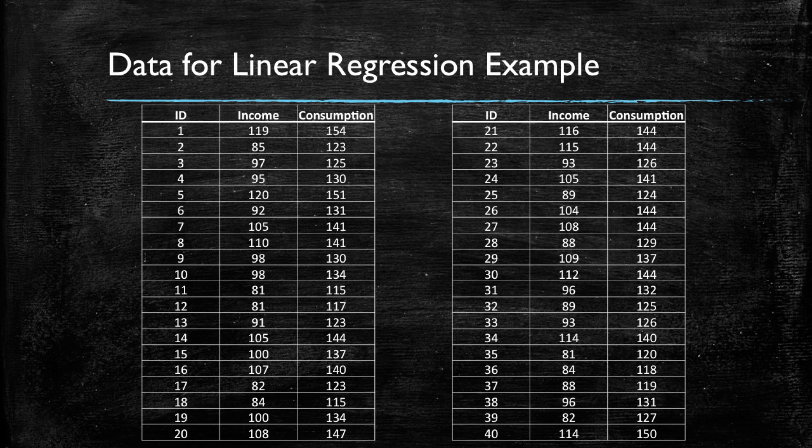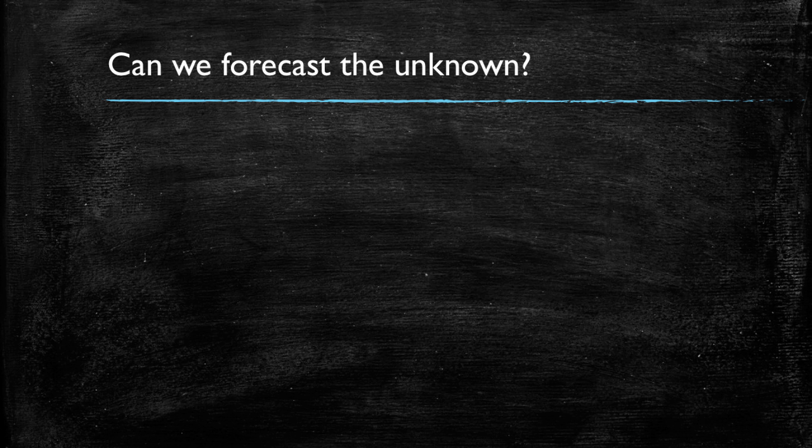Let's recap our example. We had collected a sample of data from 40 families' weekly income and consumption of a particular product. We had used this data to establish a relationship, but we're going to be asking a new question now. What if we had the income of a 41st family, a family not in this sample, yet we do not observe the consumption of this family? Can we use the data from these 40 families to estimate or predict or forecast the consumption of this family? This is exactly what we will be doing throughout this video.